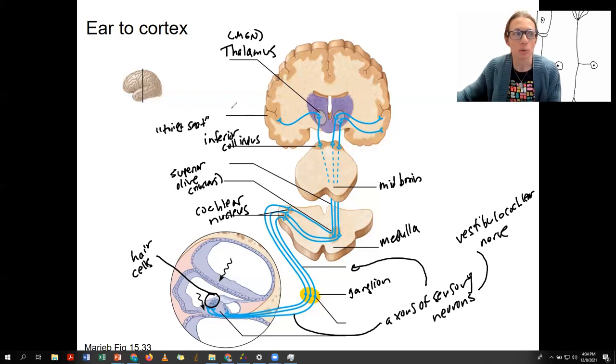From there it goes to the cortex, specifically the primary auditory cortex. This is where it would be perceived. Your thalamus is a sensory relay station. It could decide to not send the information to your primary cortex. Like if you're sleeping, you might not be consciously aware of sounds, even though you're sensing them.